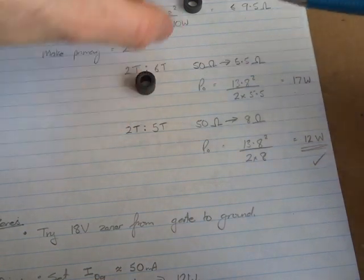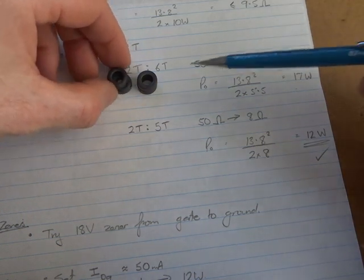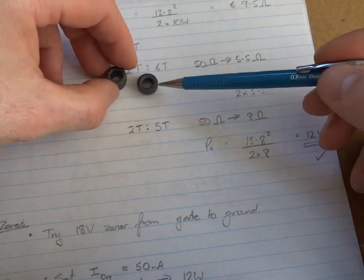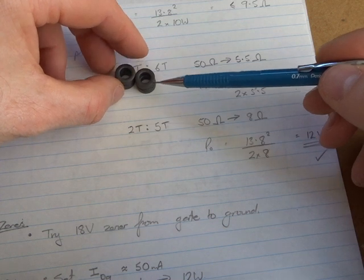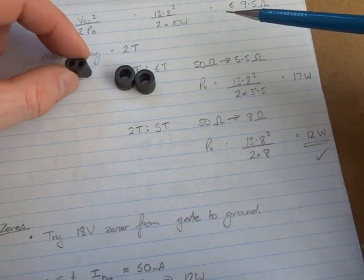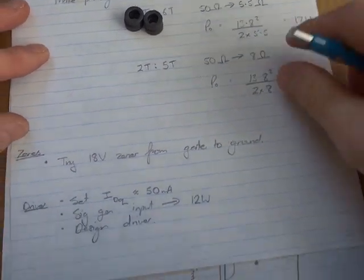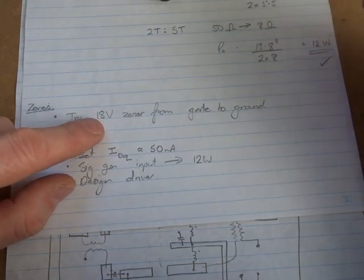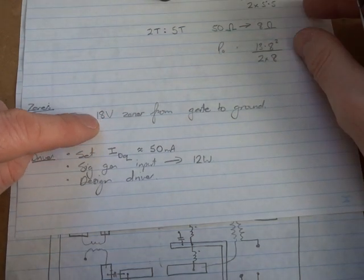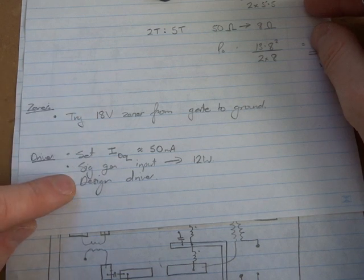Like I say using four of these for a start, FT50-43s. I've got a US trip coming up shortly. So I'm going to order some parts from kitsandparts.com. And I'll get some of the really big binocular toroids. But for now that's what I'm going to play with. We talked about the Zener diodes across the gates. So I'll just try 18 volt Zener for that.